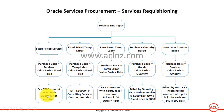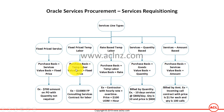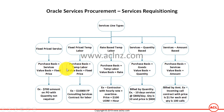You are not adding quantity — for example, quantity could be the number of hours spent delivering that particular service. So it's something similar to a lump sum amount — a fixed price. Then you have Fixed Price Temp Labour, where the purchase basis is Temp Labour whereas the value basis is Fixed Price. For example, you are purchasing a $10,000 fixed price consulting services contract for labour.